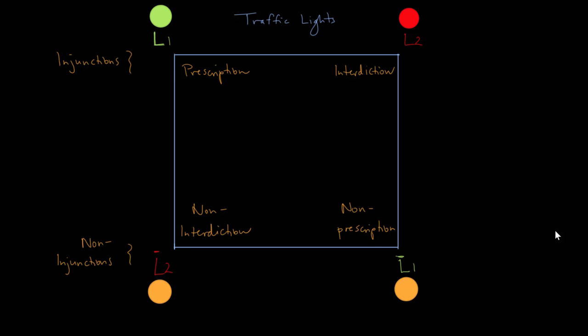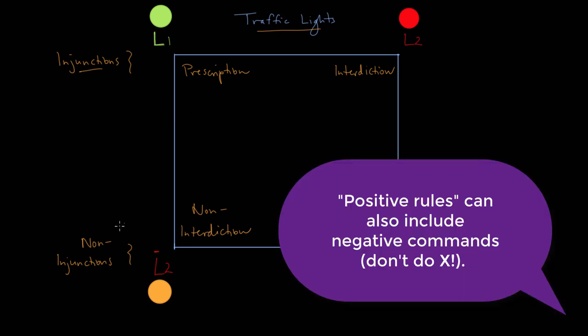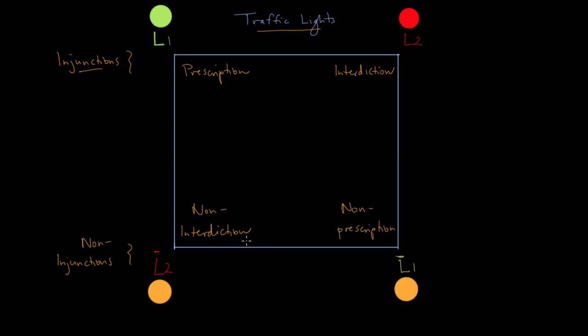That's pretty much it for the Greimas square in terms of the basic model, but I'd like to end with one more example for good measure and a few final observations. So in this example we have traffic lights, particularly European traffic lights, as we'll find out. We have a green light, which means go obviously, and then the opposite would be a red light, which means stop. Now what I've indicated here is that these top rules are all examples of injunctions. So an injunction is kind of like a command. It's an order. It's something you get to do, and these are the positive rules of the system, whereas on the bottom we have non-injunctions. It's almost like an absence of rules.